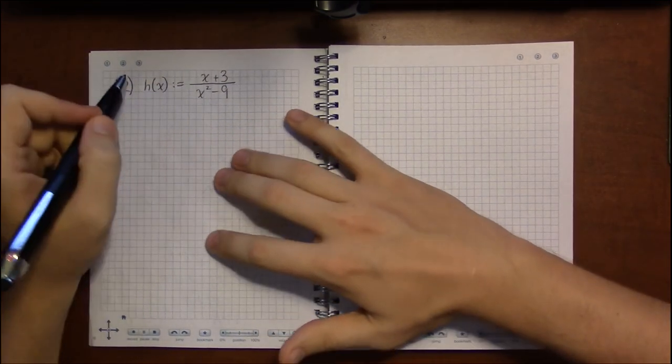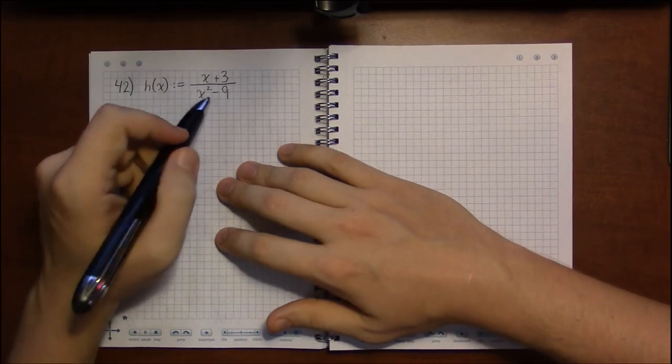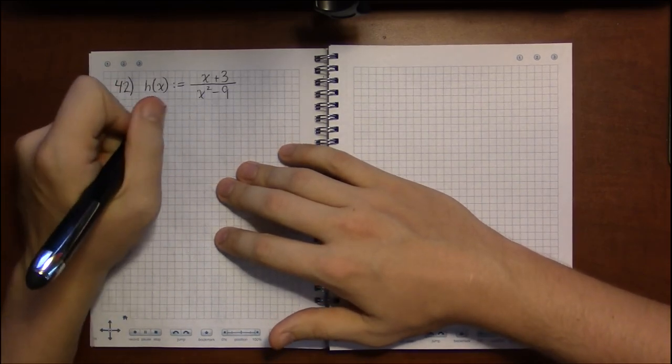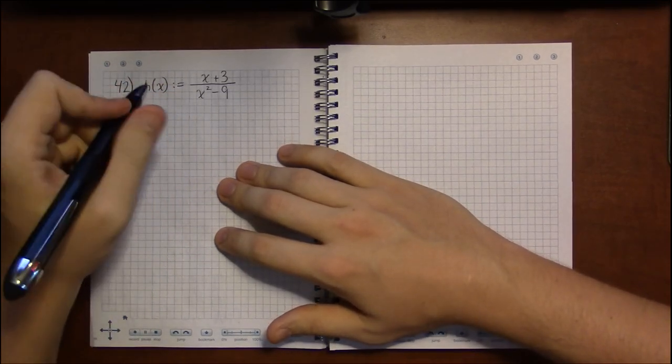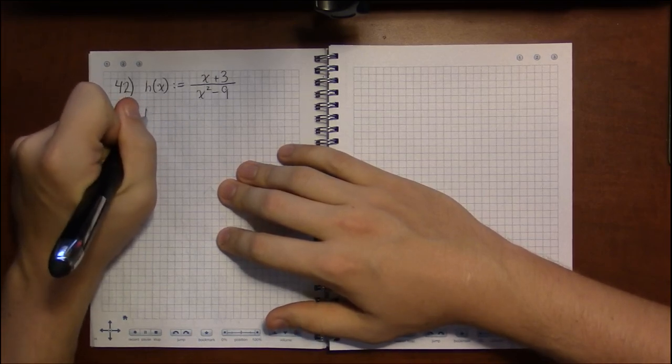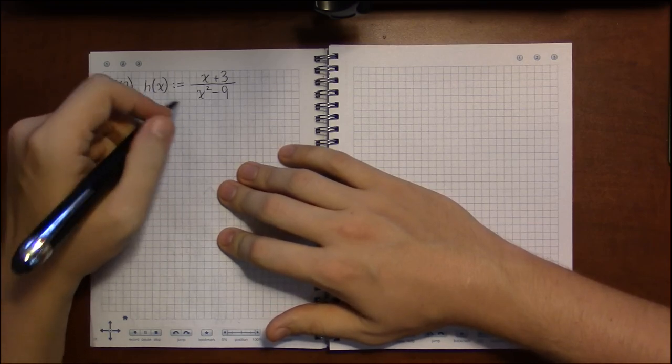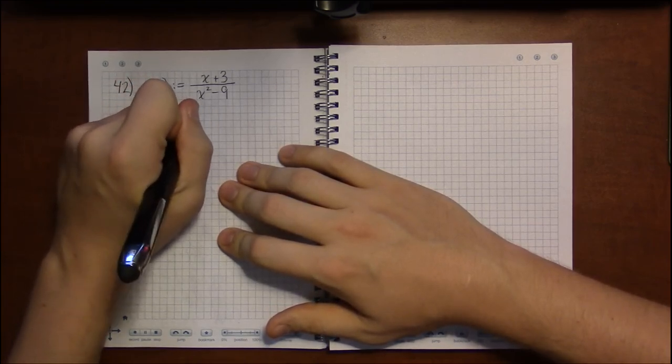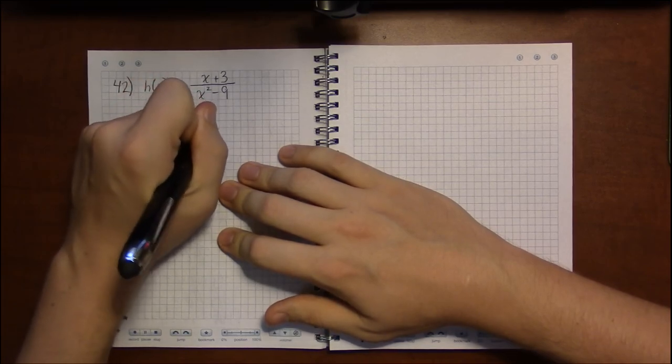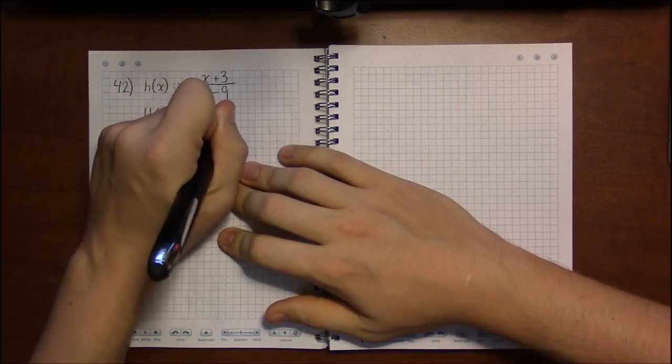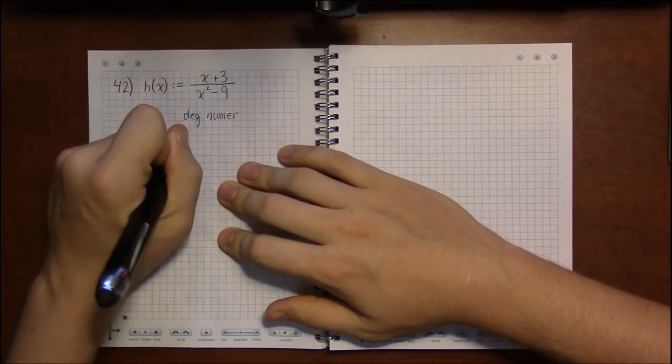Now I look at this and I see some simplification that can be done right away. But things are going to work out just fine if you don't see that. So to figure out whether we need a horizontal or an oblique asymptote, we have to look at the degrees. The degrees of the numerator, the top, and the degree of the bottom, the denominator.